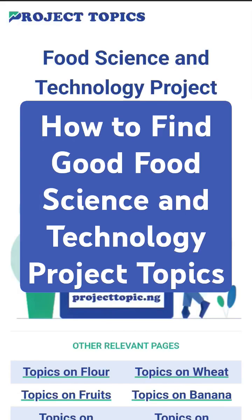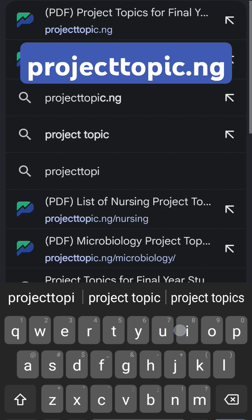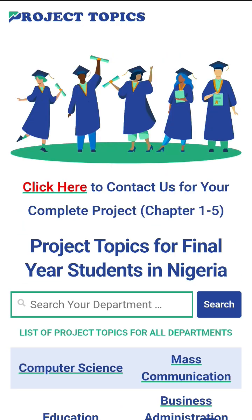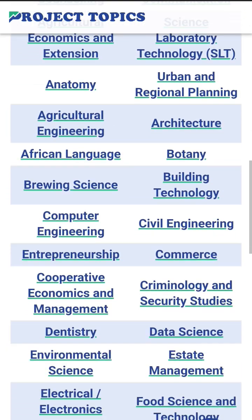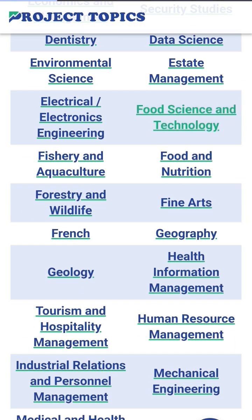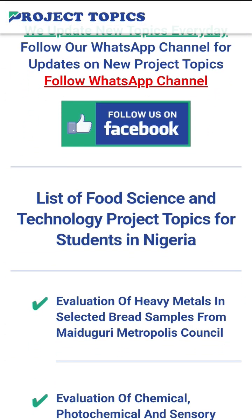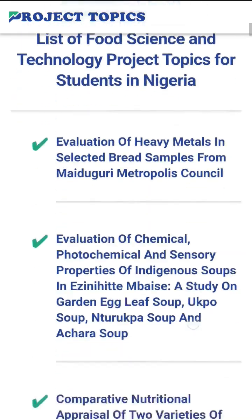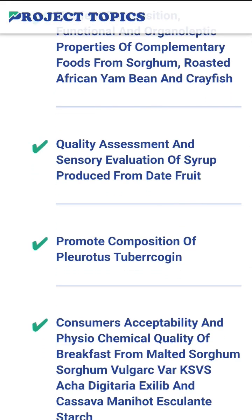How to find good food science and technology project topics for your final year research. All you need to do is visit projecttopic.ng. On the homepage you see a list of several departments — find and click on food science and technology. If you scroll down, you see where it says list of food science and technology project topics for students in Nigeria, and these are several topics you can select from for your final year research.